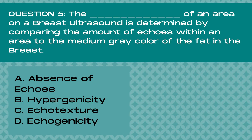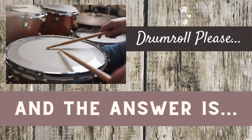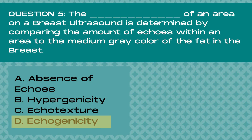Question 5. The blank of an area on a breast ultrasound is determined by comparing the amount of echoes within an area to the medium gray color of the fat in the breast. A. Absence of echoes, B. Hypergenicity, C. Echotexture, or D. Echogenicity. And the answer is D. Echogenicity. Echogenicity on an ultrasound is the brightness of the echoes within an area. The amount of echoes within the area are compared to the medium gray color of the fat in the breast to determine their echogenicity.